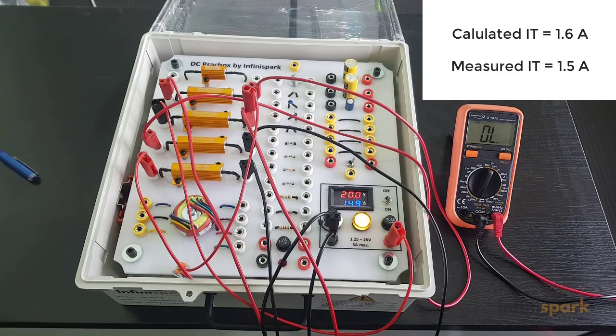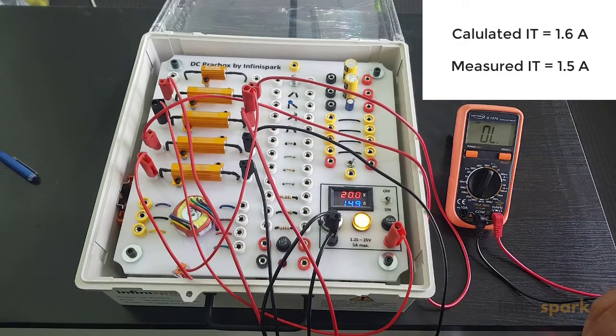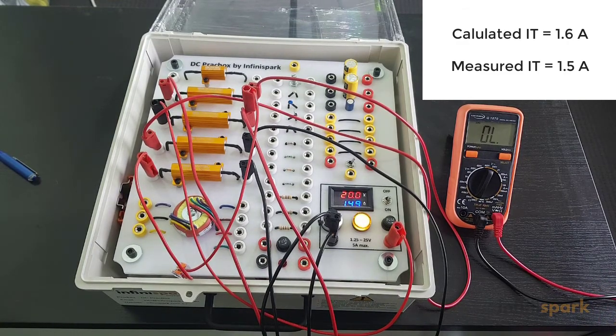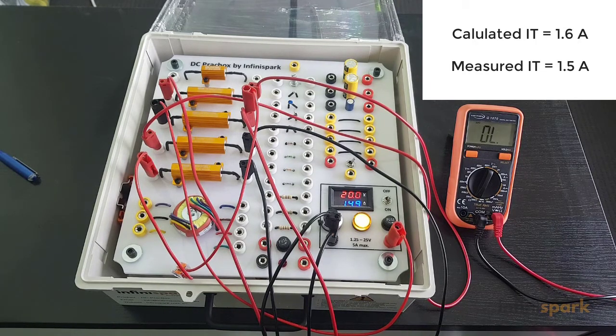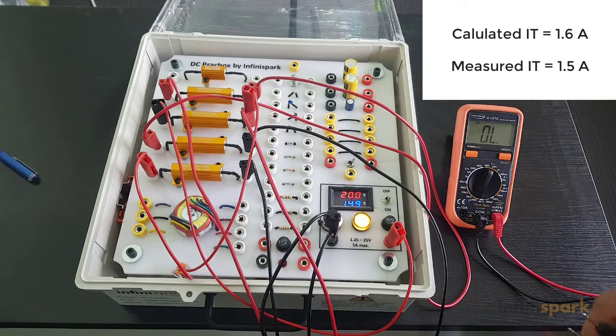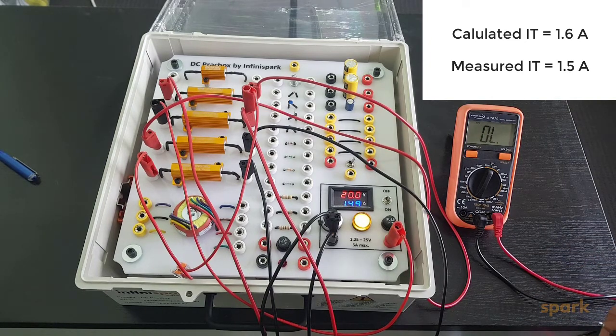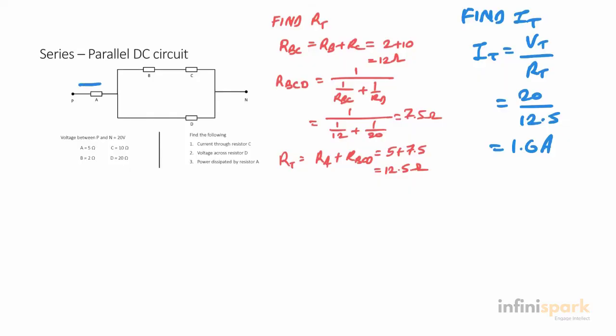Considering the measured resistance was 14 ohms, even though our calculations show the current was supposed to be 1.6 amps, we're only getting 1.49 or 1.5 amps. That's because of tolerances in the resistors. Since the current is 1.6 amps, the current through A is also 1.6 amps. We can use that to find power: PA equals IT squared multiplied by RA, which is 1.6 squared times 5, giving us 12.8 watts.